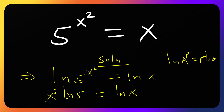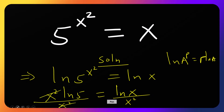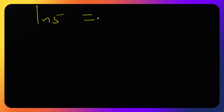Let's group the x terms on one side. We have ln x and x squared here, so we can divide both sides by x squared. The left hand side becomes ln 5, equals ln x over x squared.